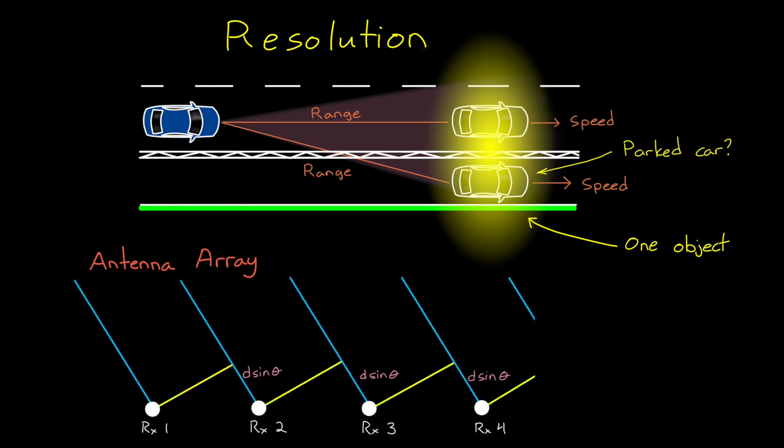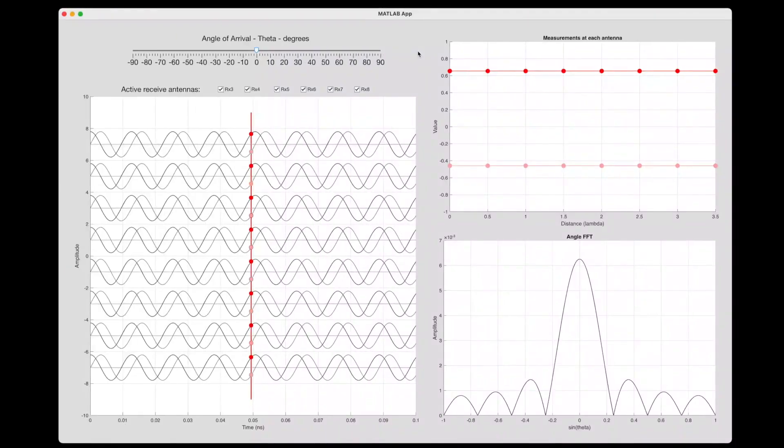By adding more receive antennas to the array, we can increase the angular resolution of the radar. And we can keep adding receive antennas, each set a half wavelength apart from each other. Now, the signal has to travel an extra d sine theta farther to each one, and therefore the delay to each antenna is more as we move across the array. So how does this improve resolution? Well, I think showing it is going to be a lot easier with a simple MATLAB app that I made. So let's hop over to MATLAB and check it out.